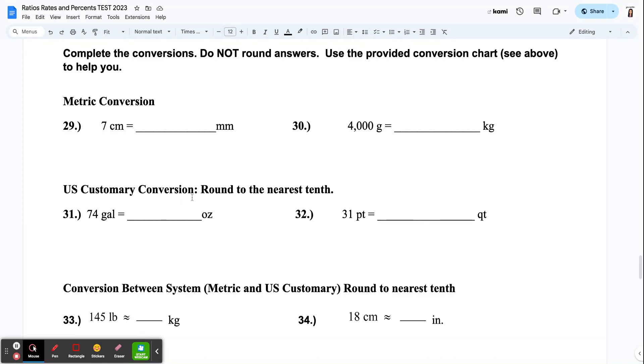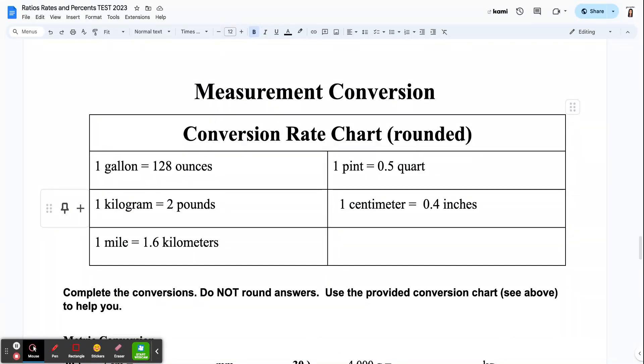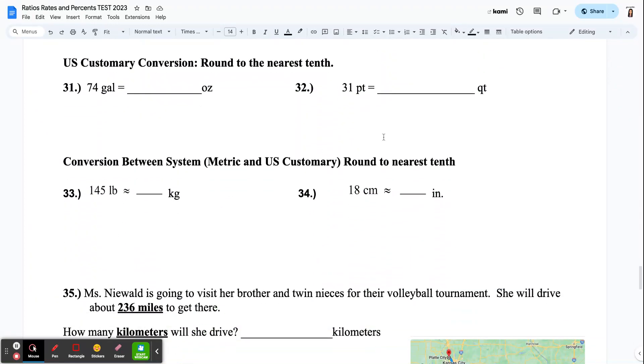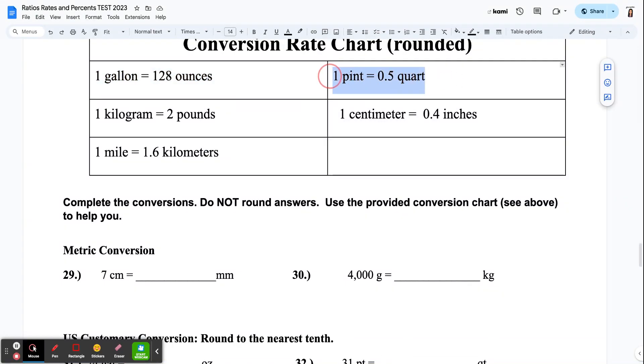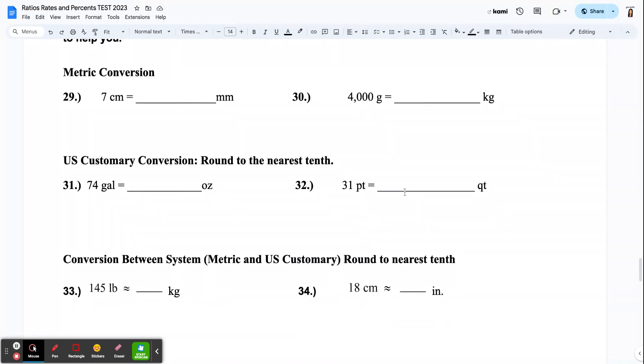The next part is our U.S. customary conversion. Round to the nearest tenth. So on this, you are rounding. You may get some funky answers. You're going to round to the nearest tenth. So this is a two-part type question. Can you convert? And do you know how to round correctly? We've been rounding a lot this year, so I do feel like by now I need to be able to test you over rounding to the nearest tenth. So this is 74 gallons equals how many ounces. And I can look up here, and I can see gallons and ounces in my conversion chart, and I can use that to help me answer my question.